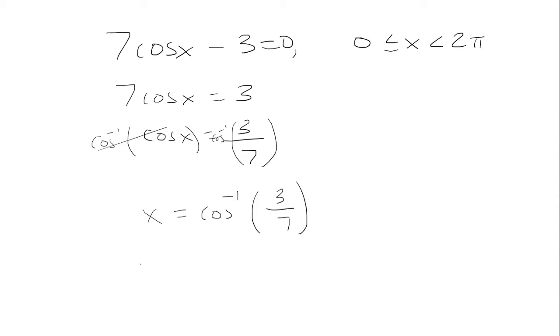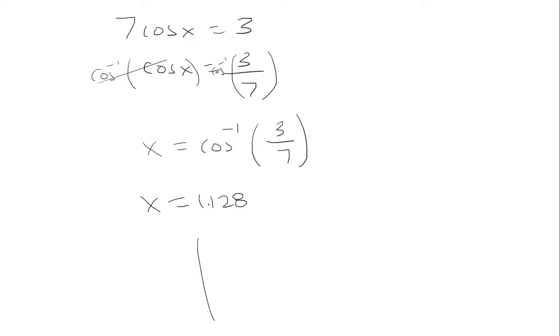And if I plug it in the calculator, I get x is 1.128. Now notice that cosine is equal to 3 over 7, and we know the acronym All Students Take Calculus. Cosine is positive in the first and the fourth quadrant.